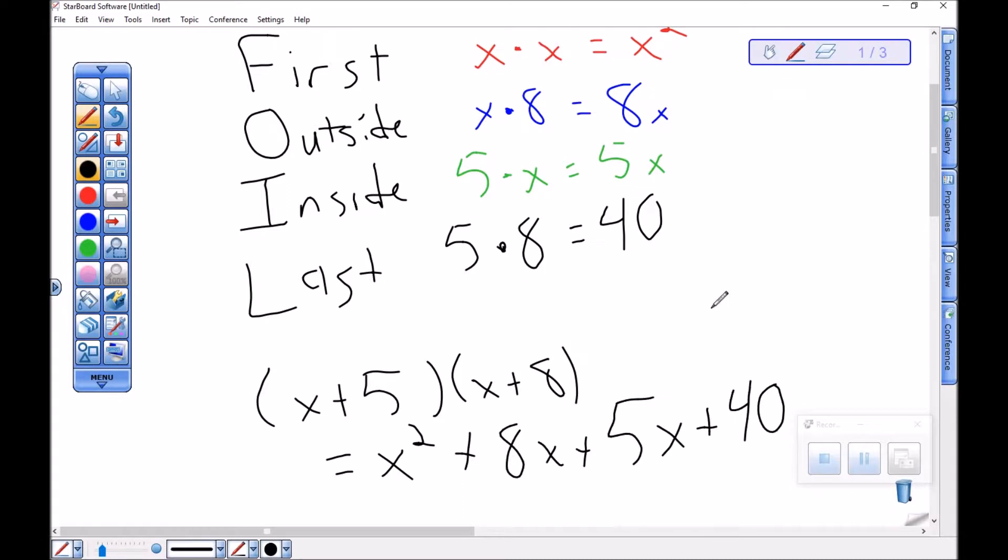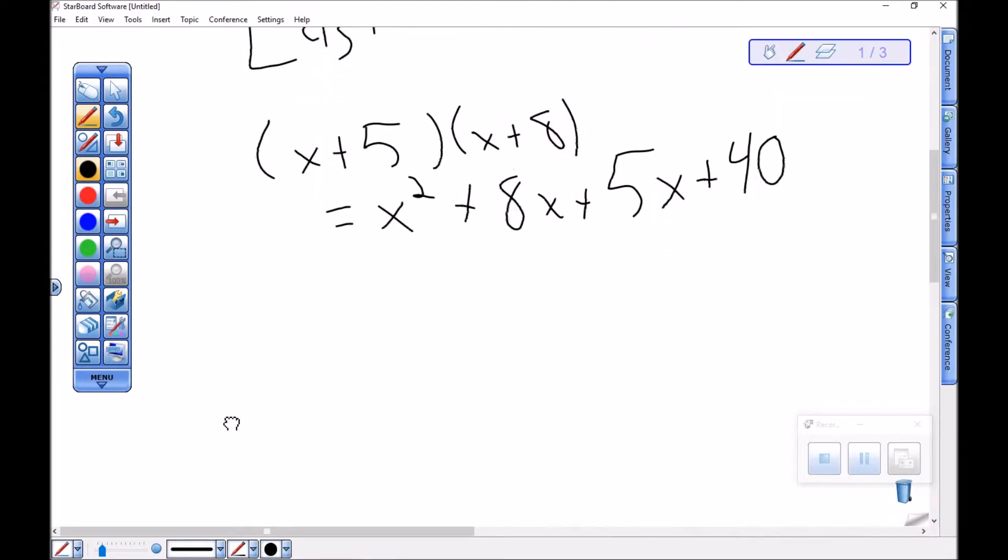Since I took a binomial times a binomial, I should have gotten four terms, which we did. And the FOIL helped us remember what four terms those were. Now I've got an expression here, so I should really simplify it.